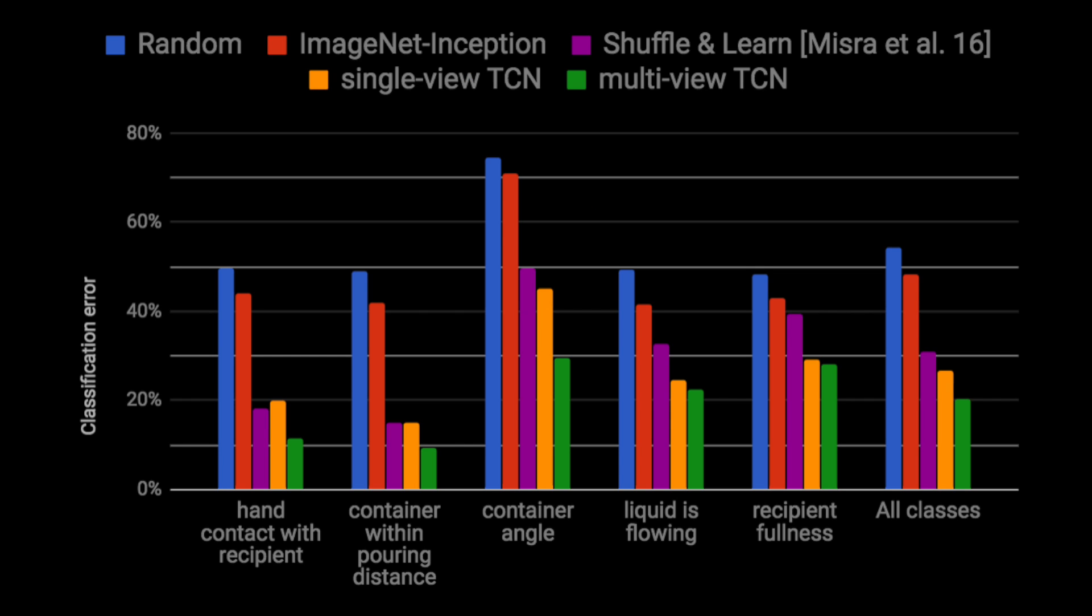We find that TCN models automatically discover the visual cues that are important for interaction, including poses, relative distances, contact, and cup fullness. The nearest neighbors found with TCNs are more meaningful and indicative of task-relevant events than the neighbors found by other baselines such as Shuffle and Learn or an ImageNet-trained Inception model. We find that multi-view TCN outperforms the single-view version.